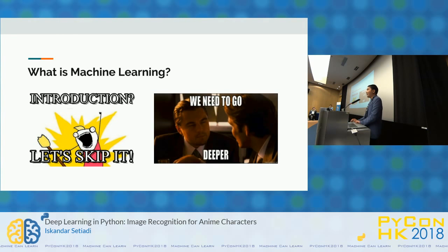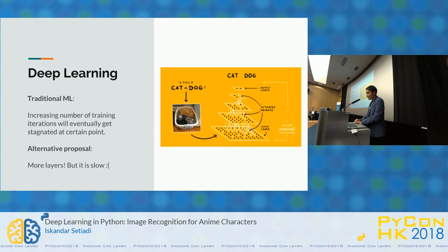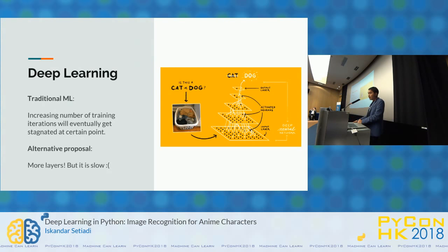I believe everyone already understands machine learning, so I won't introduce basics like neural networks. Traditional machine learning, if you increase the number of iterations, at some point it will stagnate — it won't improve or give any performance boost. The alternative is using more hidden layers, which is what we know as deep learning. But with deep learning, first it's slow, and second you probably need a lot of data, otherwise your model won't work well.